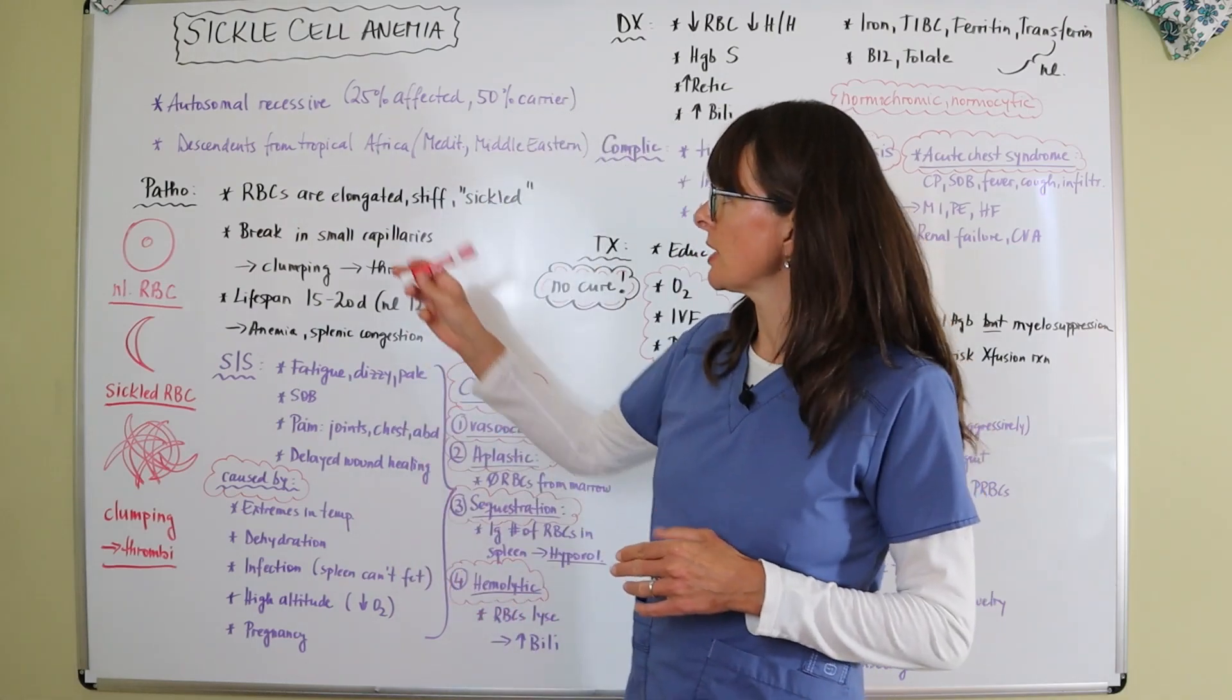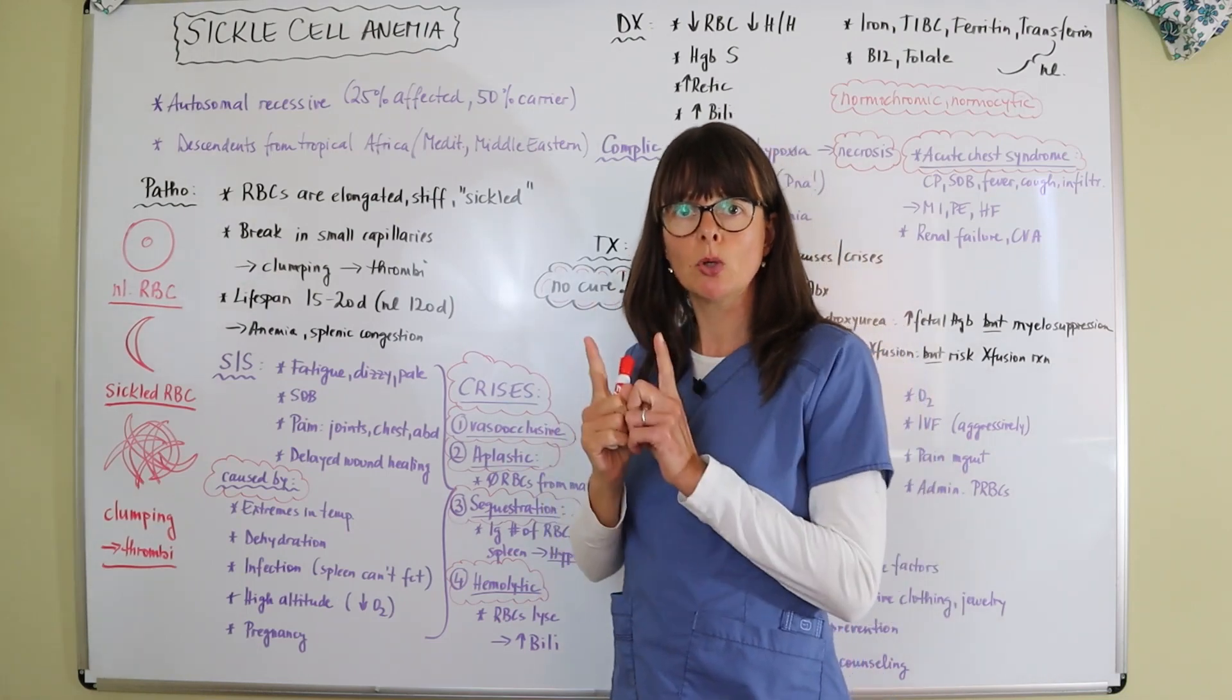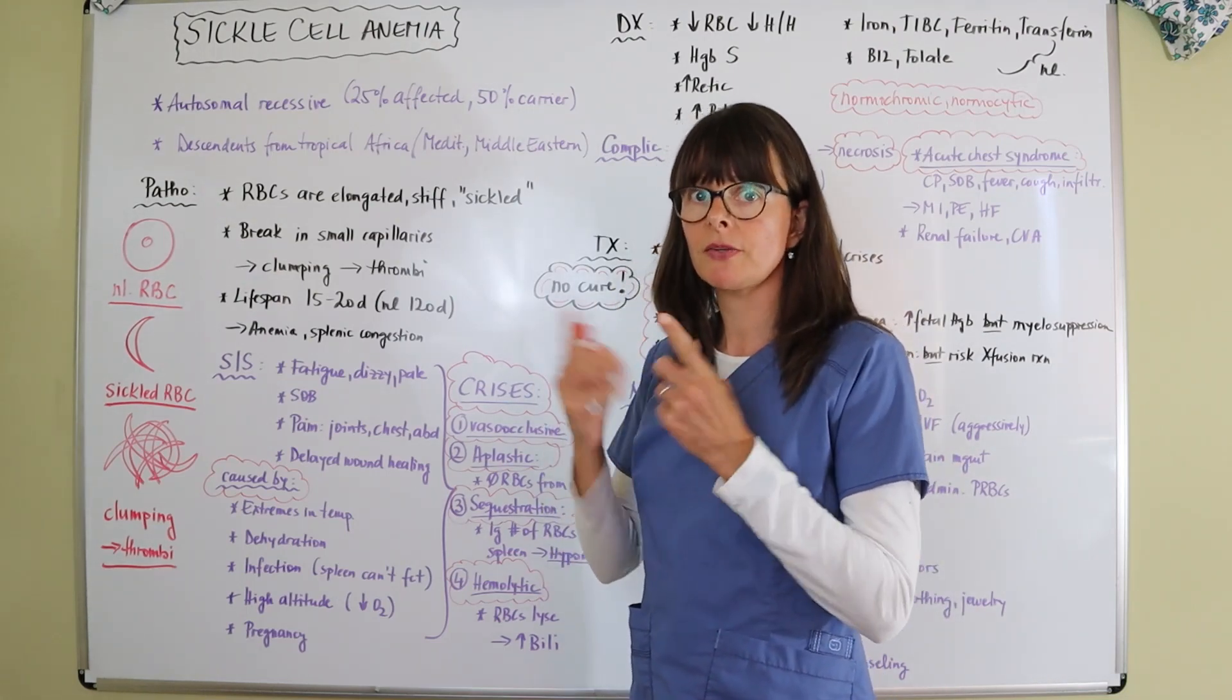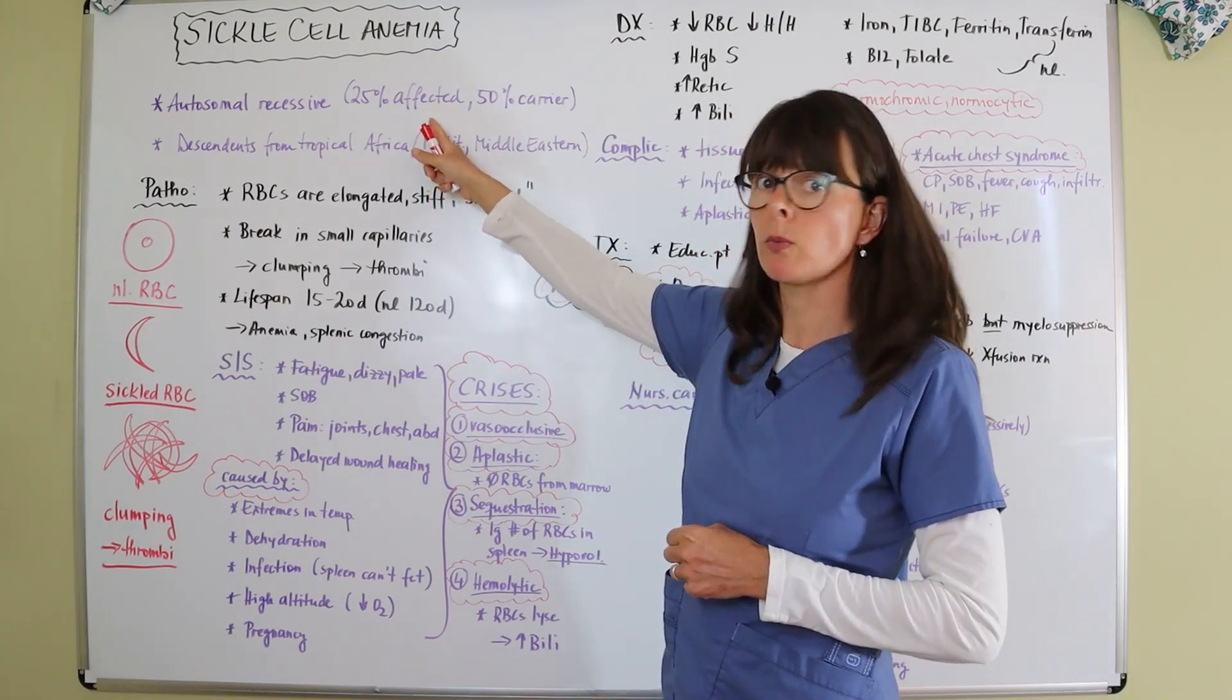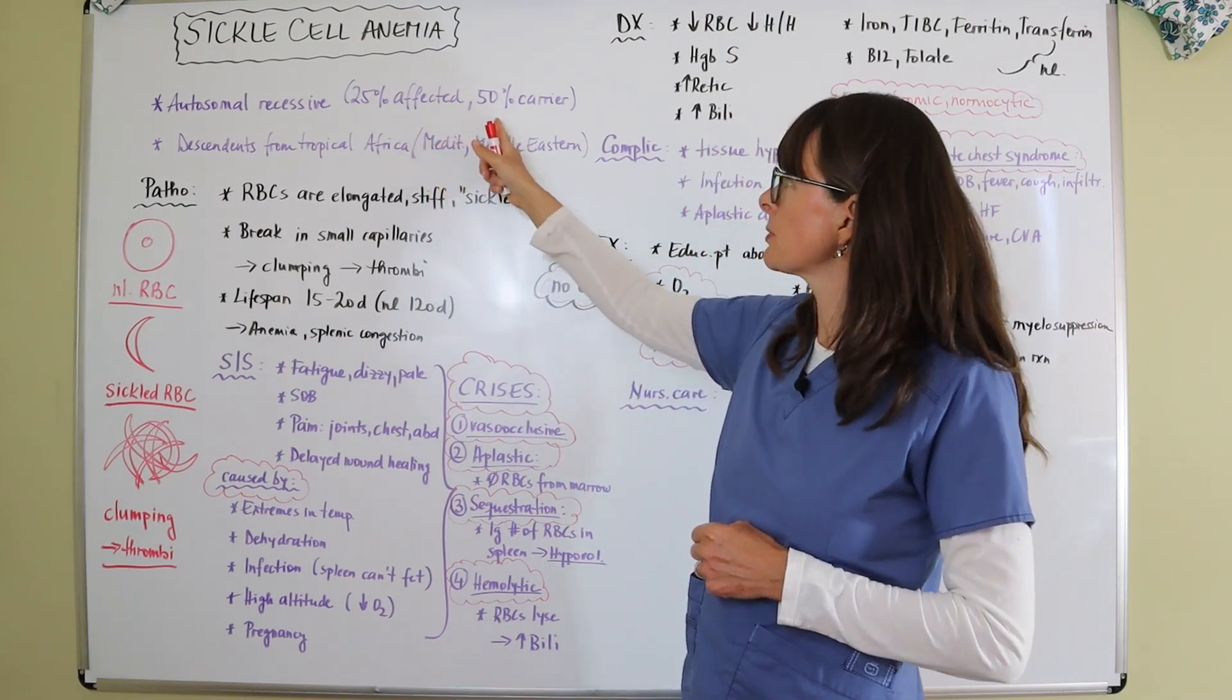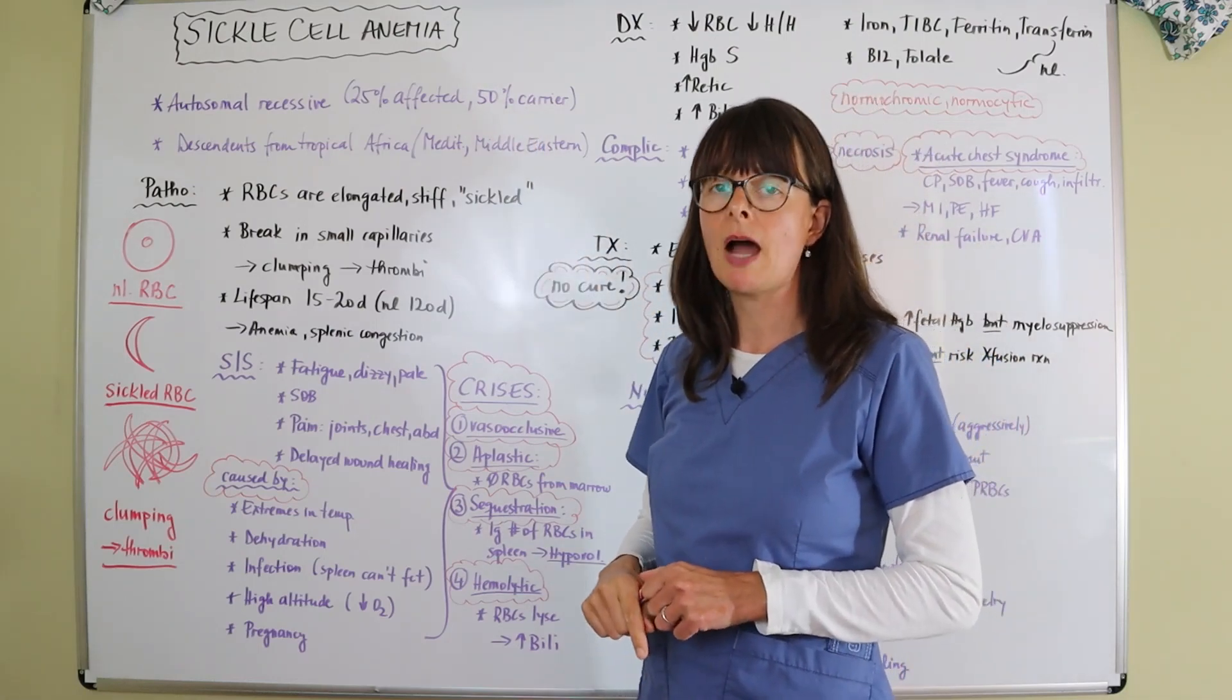It is genetic and autosomal recessive, meaning that when two people who have the sickle cell trait get together and have offspring, 25% of that offspring will be affected, 50% will be a carrier, and the other 25% will be unaffected.